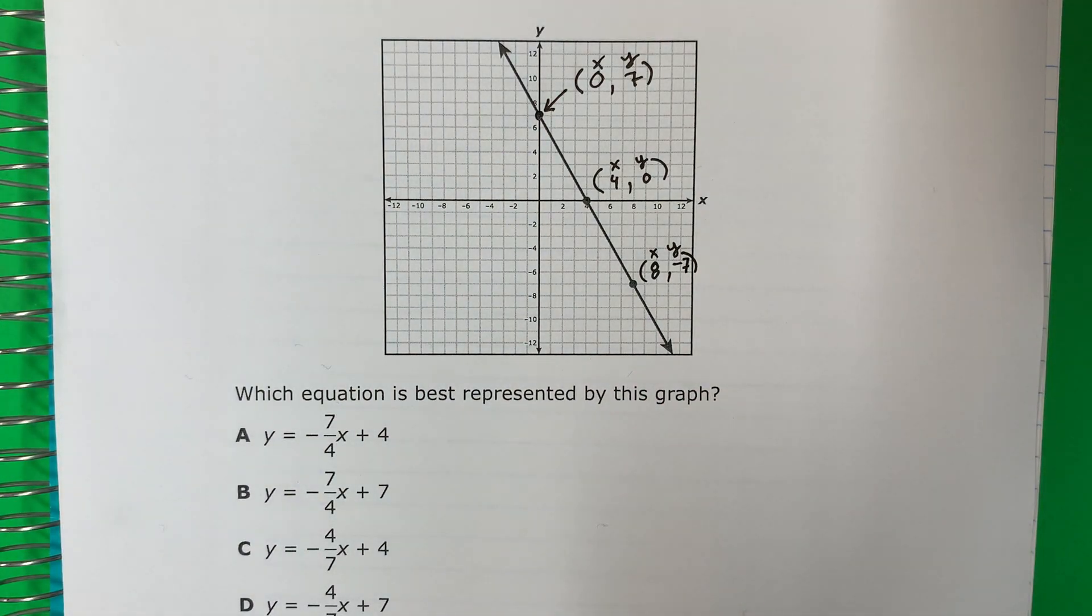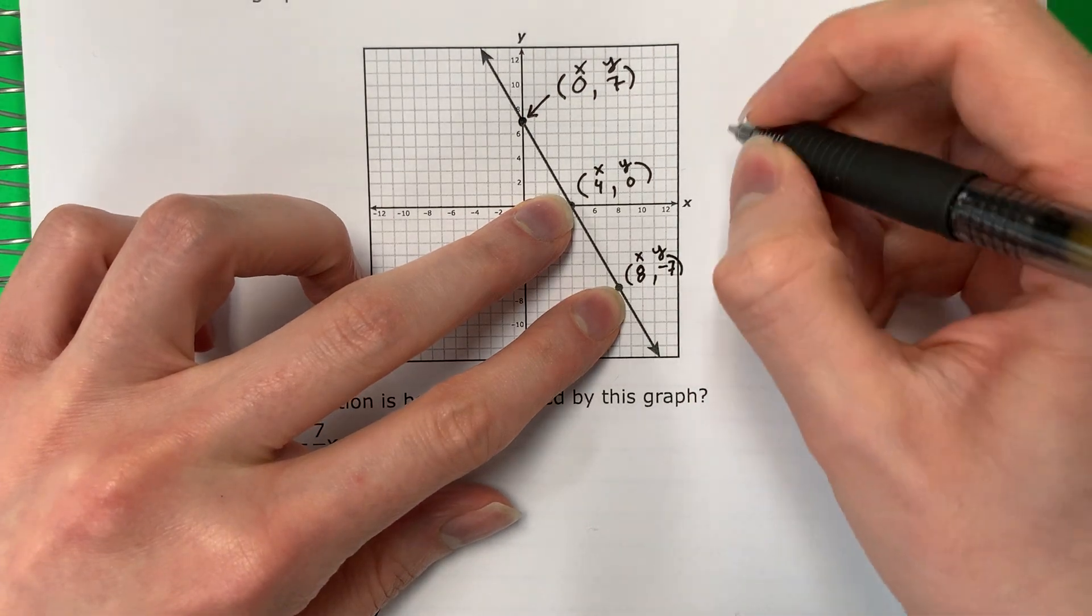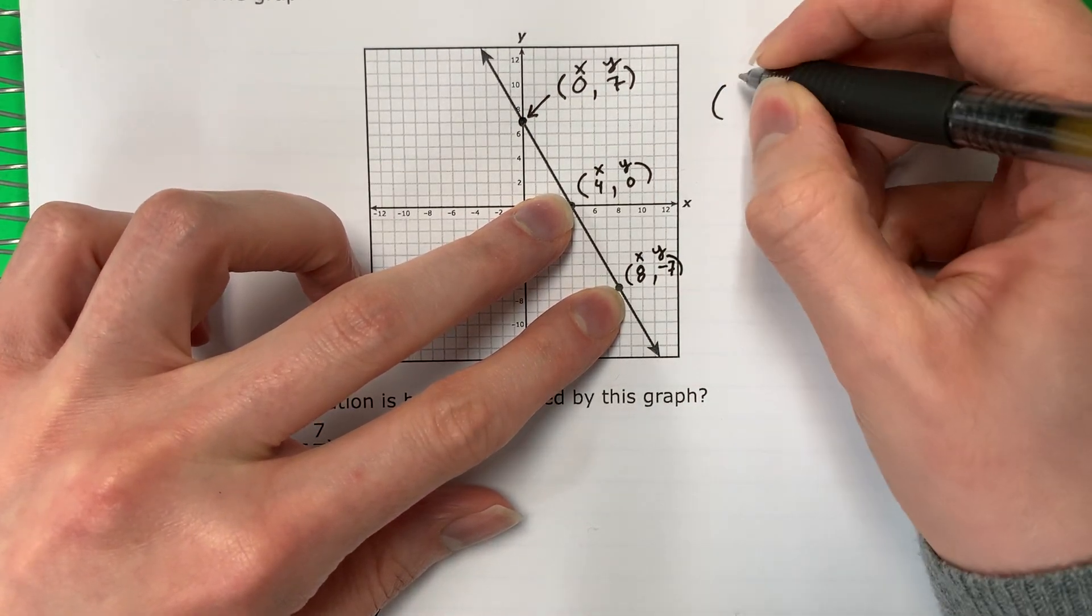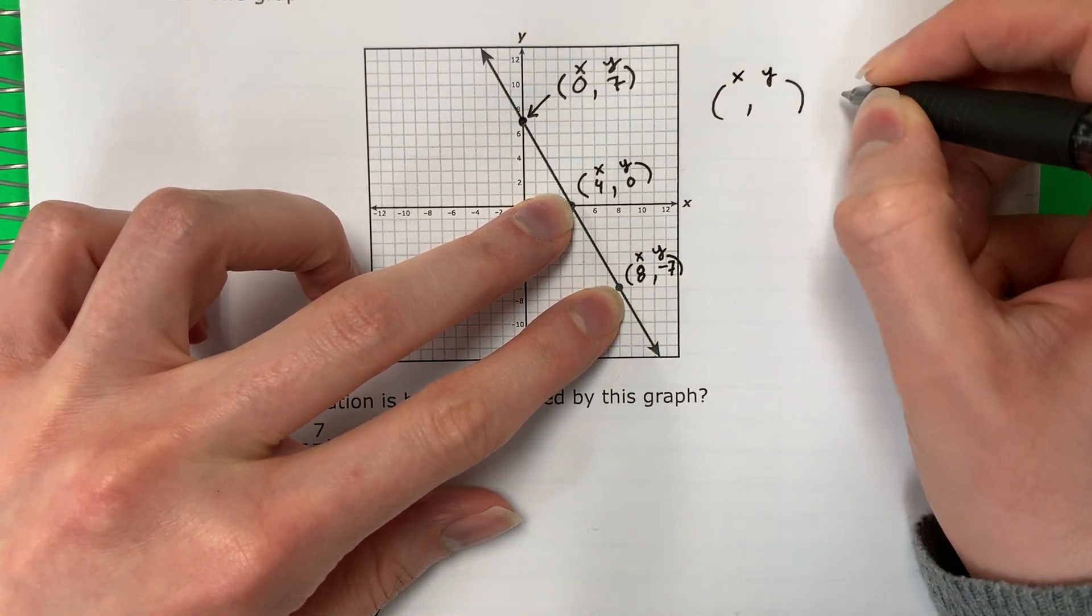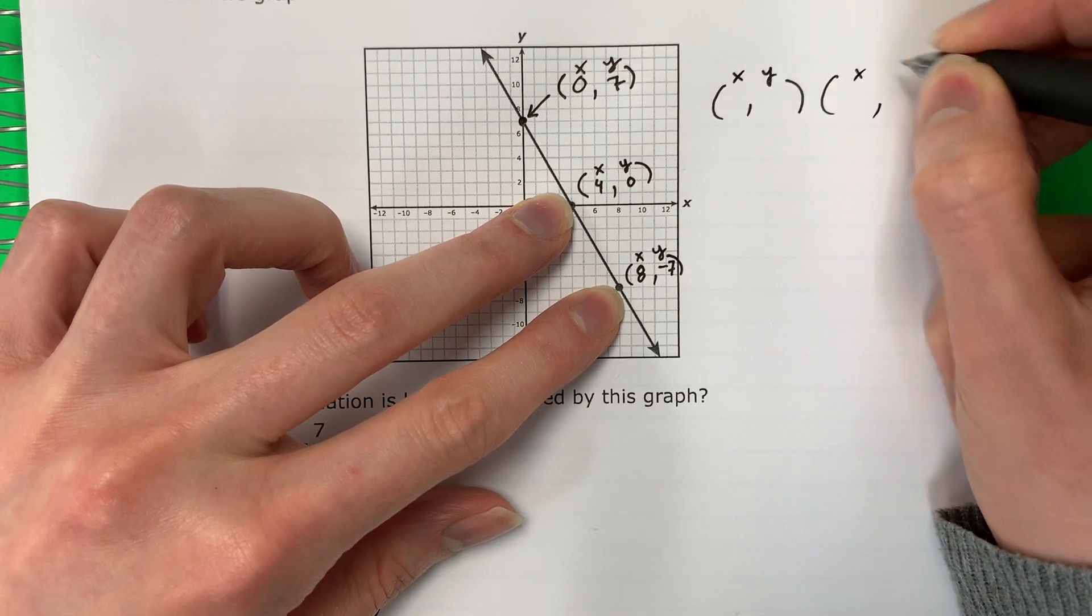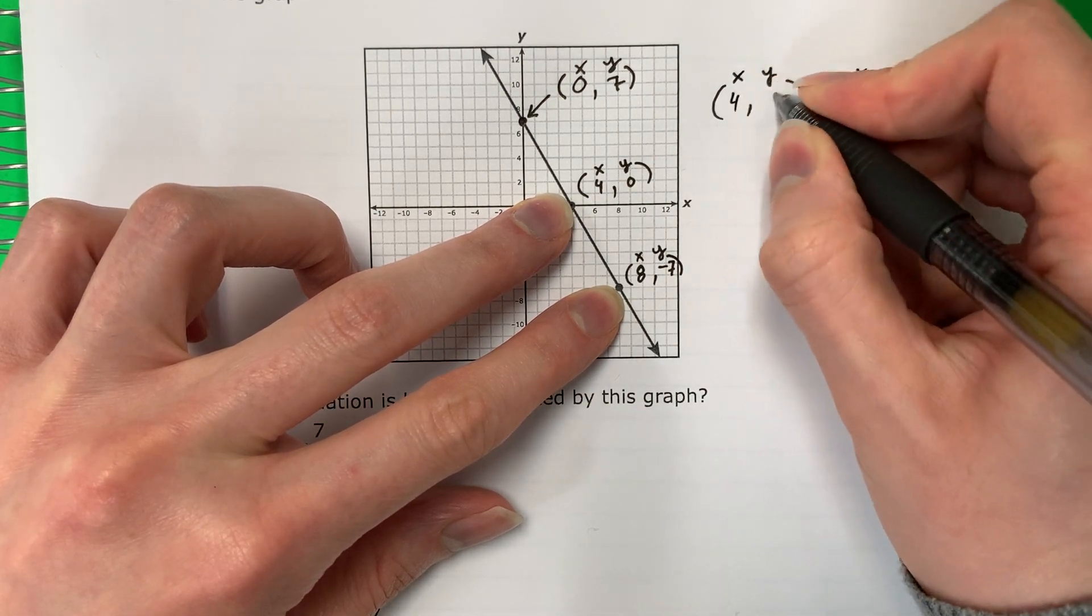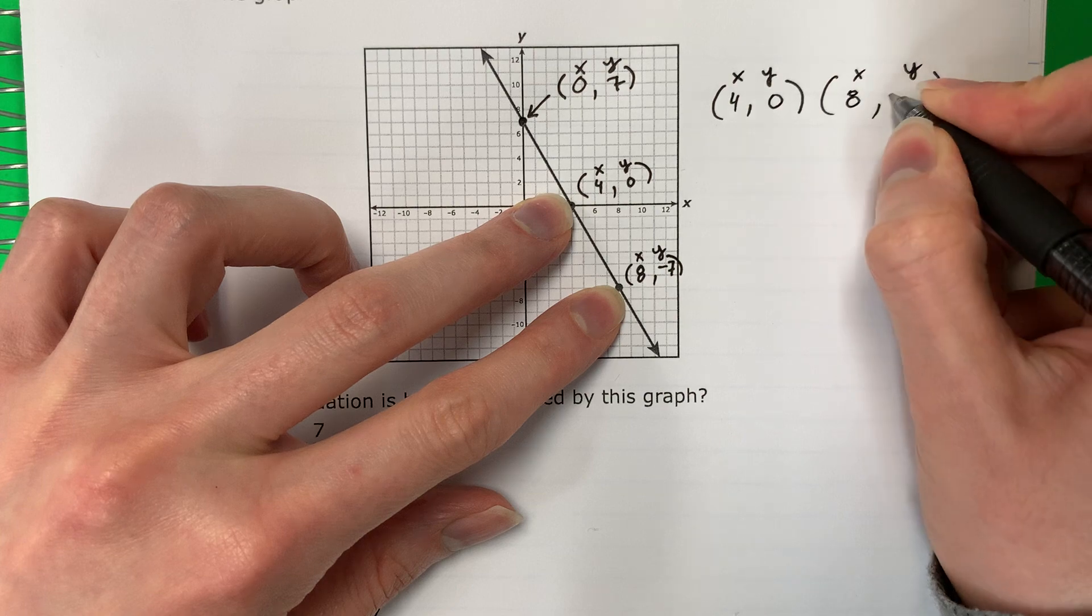So I'm going to go ahead and pick whatever I want. I'm going to pick these. So my first thing I'm going to do is I have X, Y, X, Y. So that will be four, zero, and eight, negative seven.